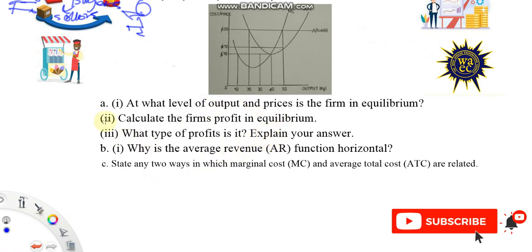So now in this competitive market, we've been asked at what level of output and prices is the firm in equilibrium? Keep in mind that equilibrium is really the place in the markets where you consider things to be stable, where there's no incentive to leave the market. There's no incentive from the economic agents, whether it's buyers or sellers, to change anything. They are perfectly happy where things are stable.